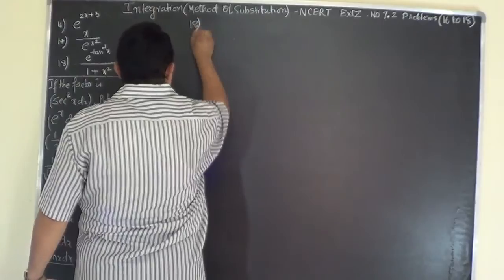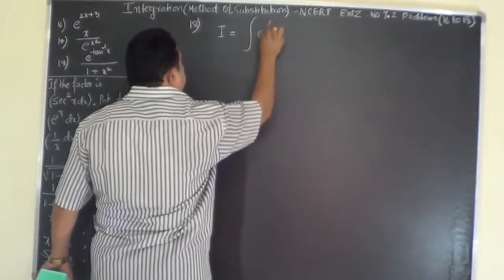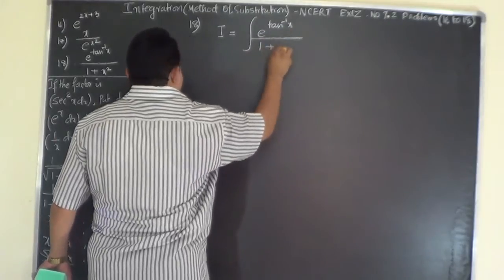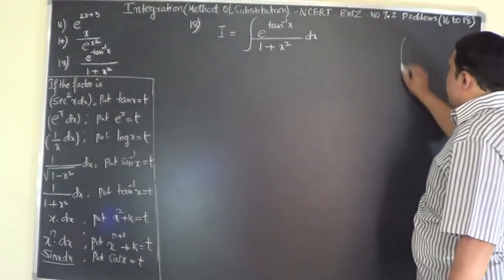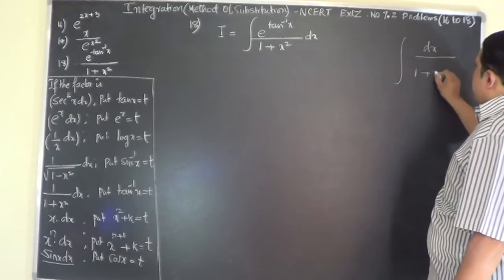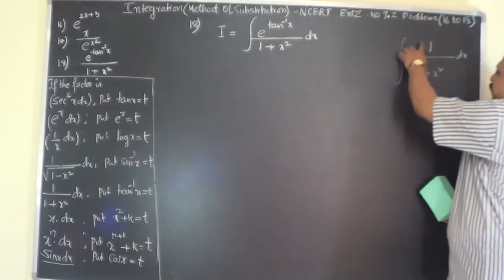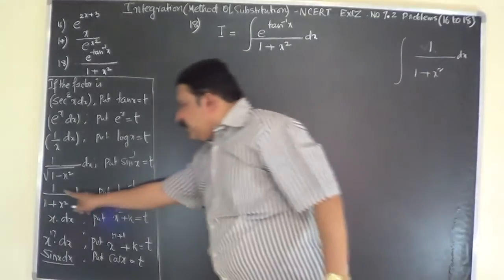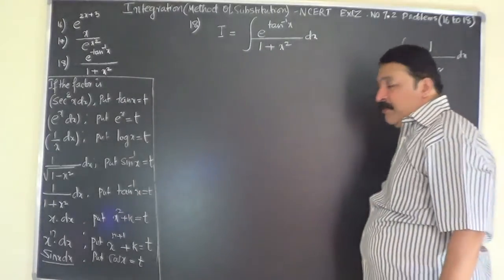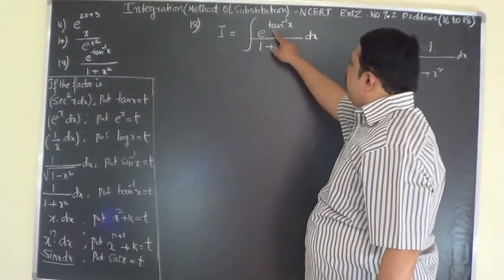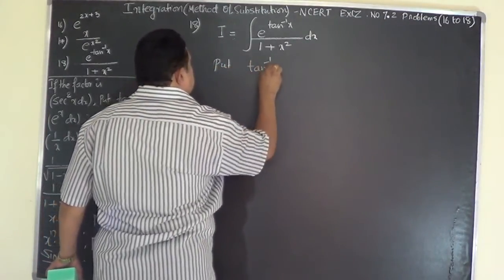Problem number 18: write in standard manner, I equals integral of e to the power of tan inverse x, over 1 plus x squared, dx. Observe that this problem contains dx over 1 plus x squared as a factor. If the problem contains 1 by 1 plus x squared dx as a factor, then there must be a tan inverse x component in the problem, and that component has to be put as t. So here we put tan inverse x equals t.